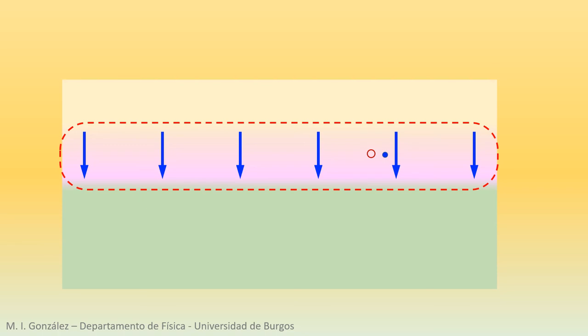However, the electric field in the depletion zone strongly drives the electron upwards. Similarly, the hole, behaving as a positive charge, is driven down.